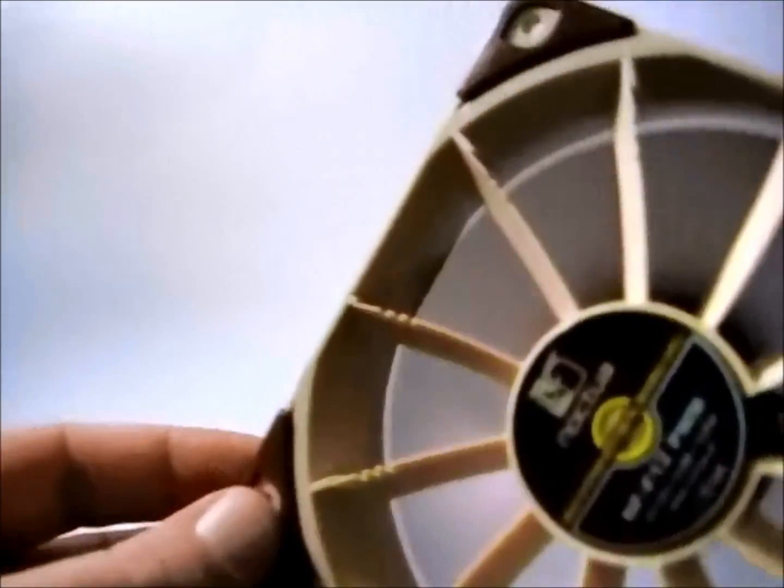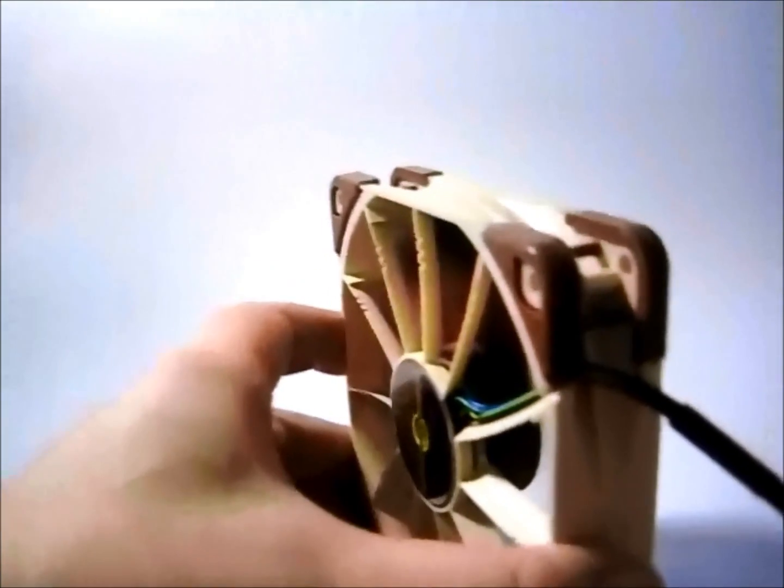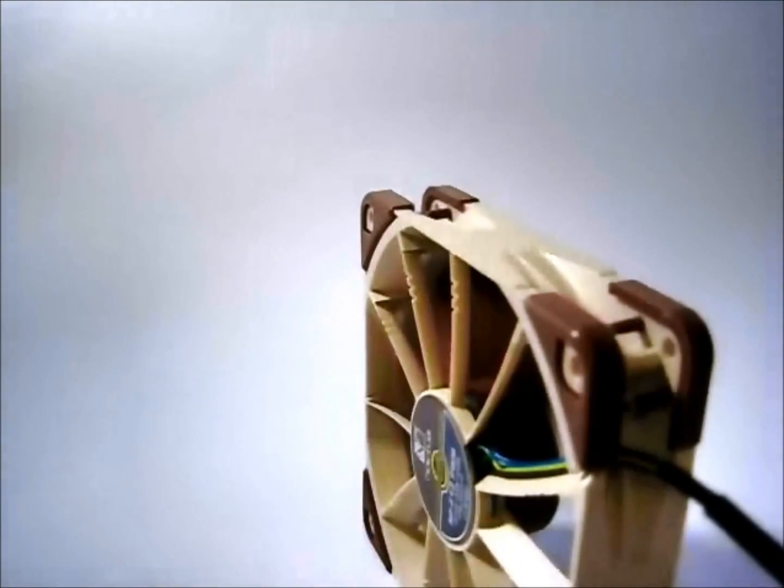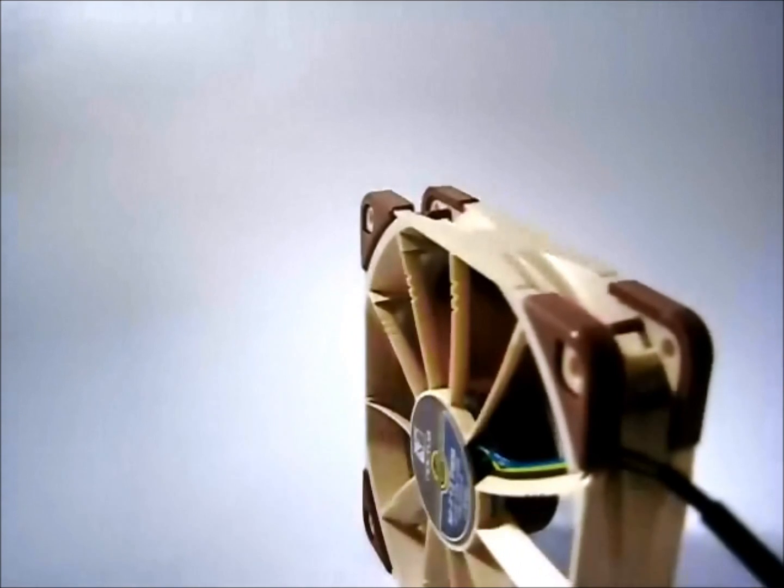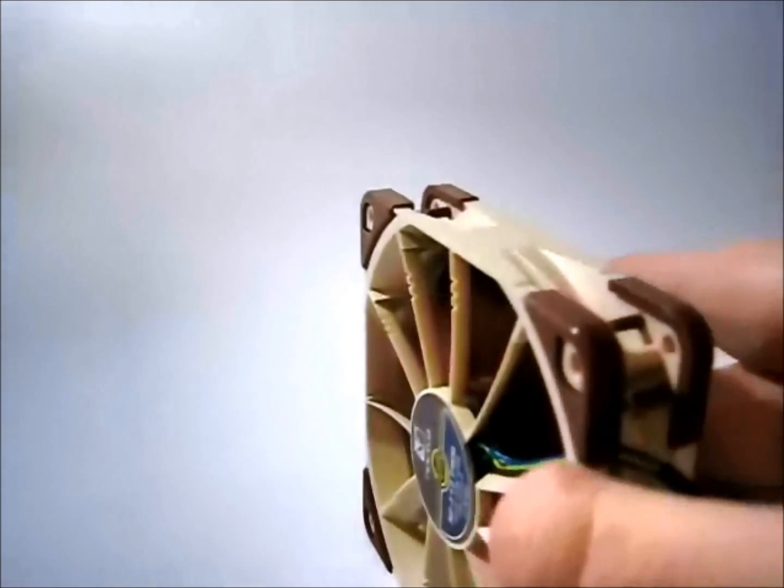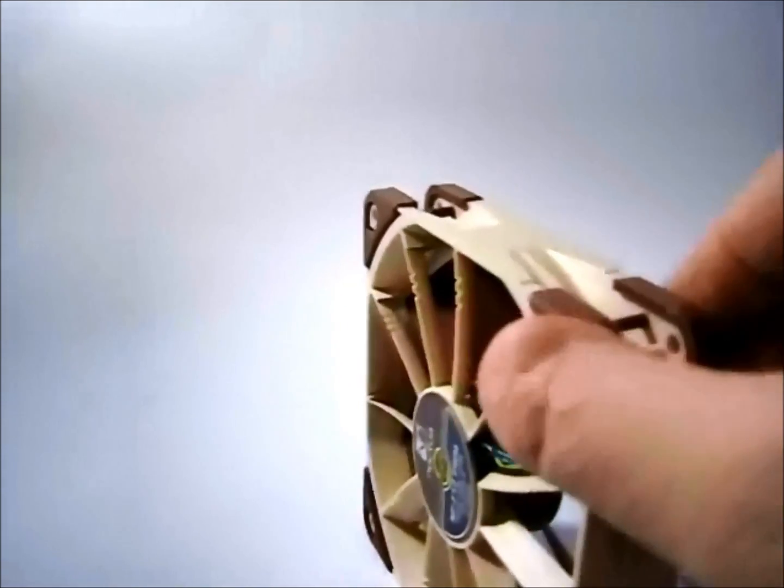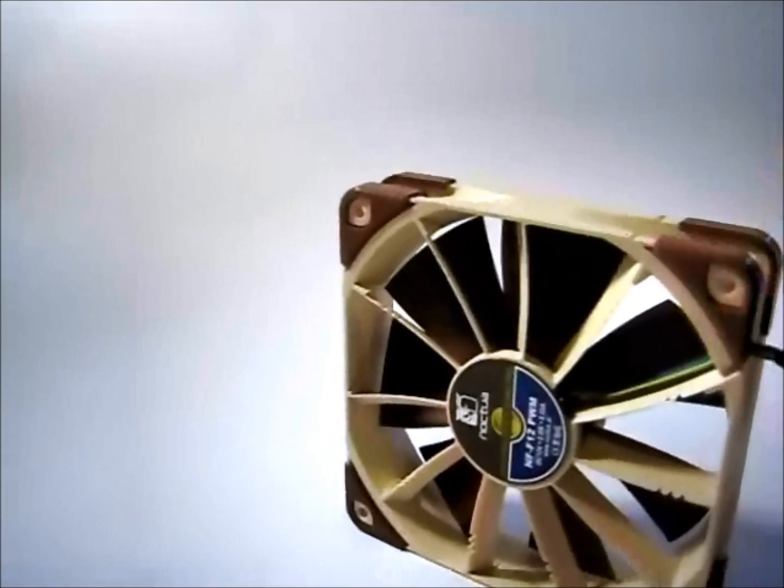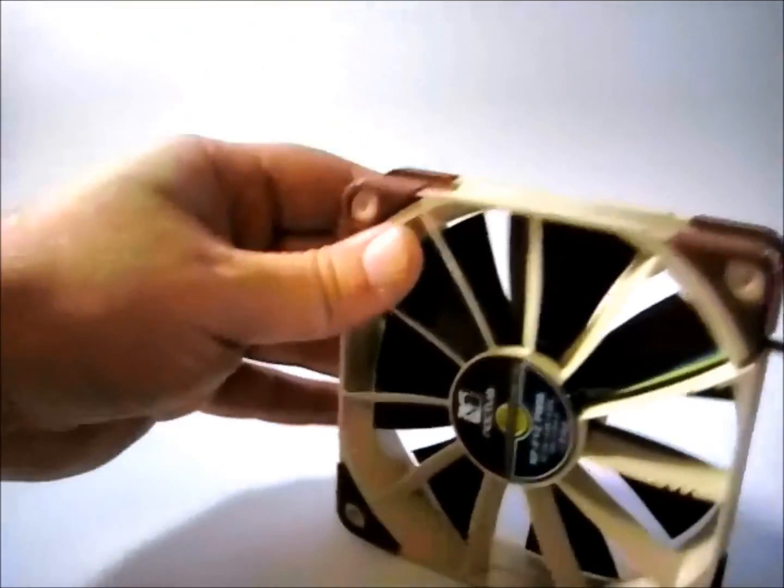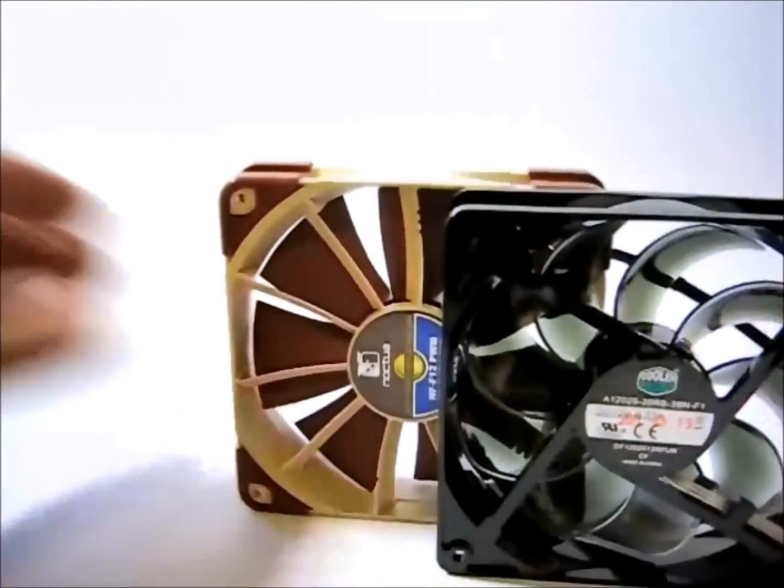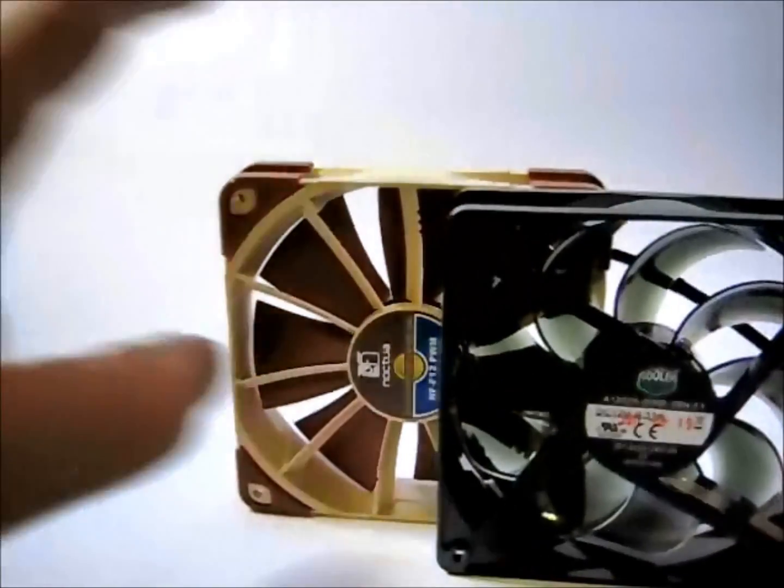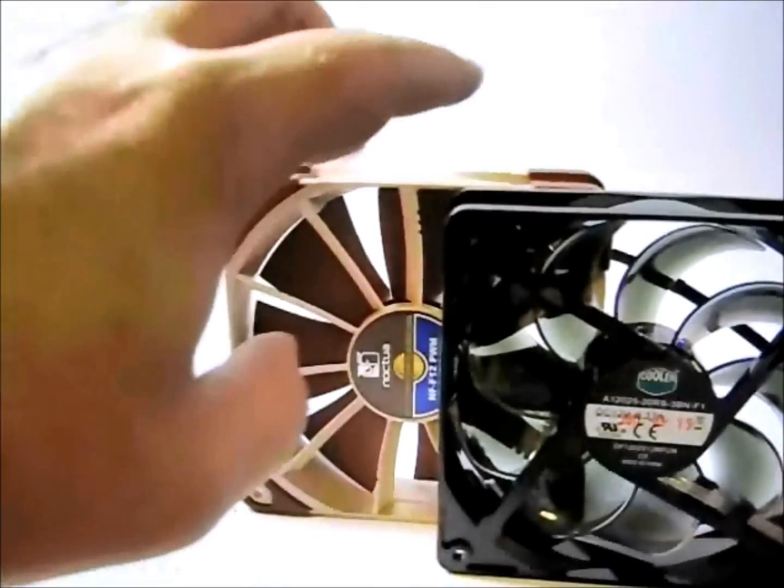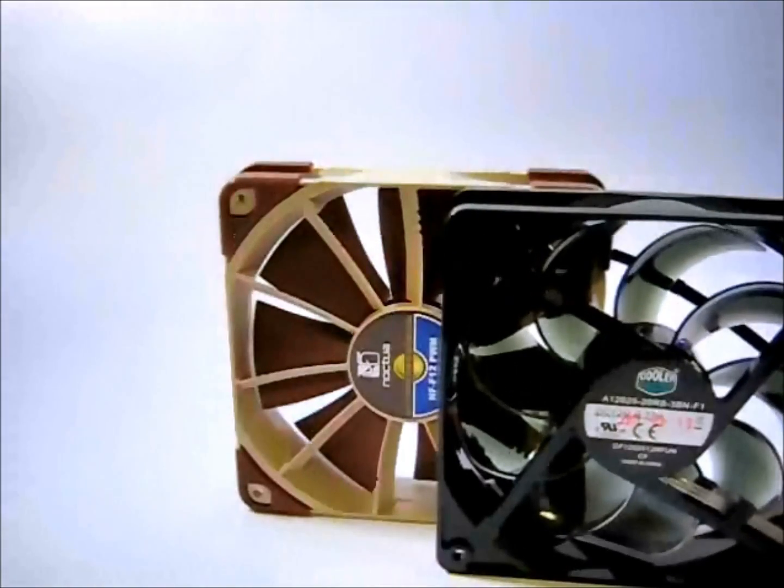So between the Noctua fan and the Scythe fan obviously there's a huge difference. The Scythe regular case fan is a lot louder. But when you put it beside the Sickle Flow from Cooler Master they run virtually the same. There's a difference of 0.4 decibels, Noctua being at 18.6, the Sickle Flow at 19 decibels.